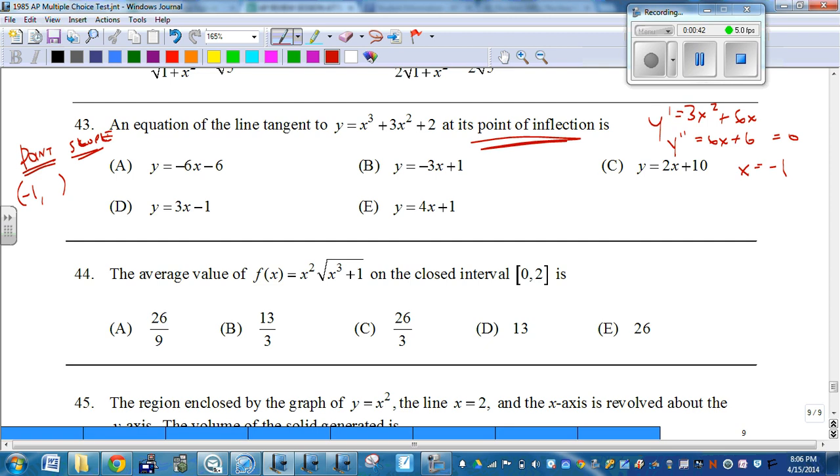How do we find the y value? Plug it into the original. Put negative 1 in here, negative 1 cubed is negative 1. Negative 1 in here, we get 3 times 1, which is 3, plus 2. So we get 4.